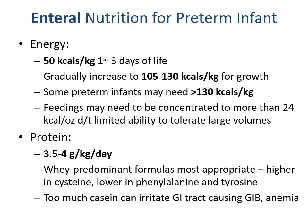For enteral nutrition, if the infant is more stable, calorie goals are still 50 calories per kilogram for the first three days, gradually increasing to 105 to 130 calories per kilogram to support growth — some may need even more. Feedings may need to be concentrated to more than 24 calories per ounce due to limited volume tolerance. Normal breast milk or standard formula is 20 calories per ounce, so we need significantly more caloric density for this patient population.